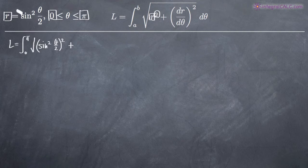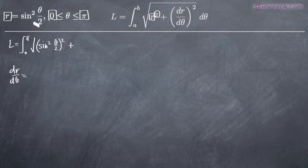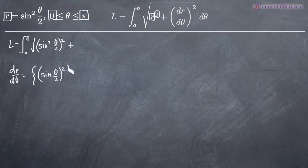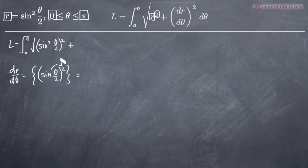dr over d theta represents the derivative of our function r, so we need to compute that. We can rewrite sine squared of theta over two as sine of theta over two, with the squared on the outside. When we take the derivative, according to the power rule, we move the exponent out in front, giving us 2 times sine of theta over two — this is going to be an exercise in chain rule.